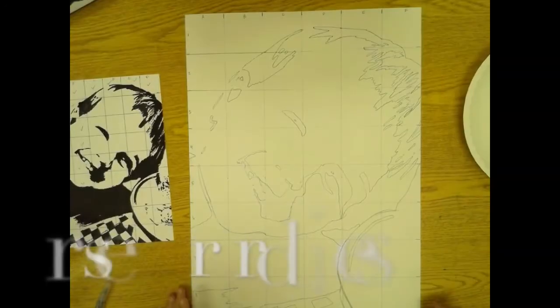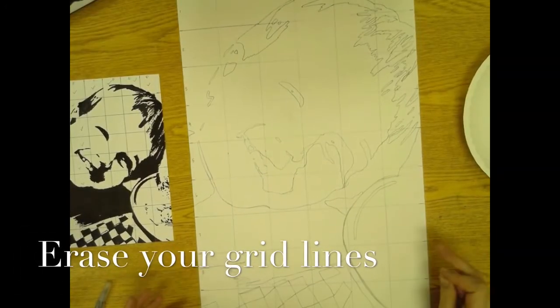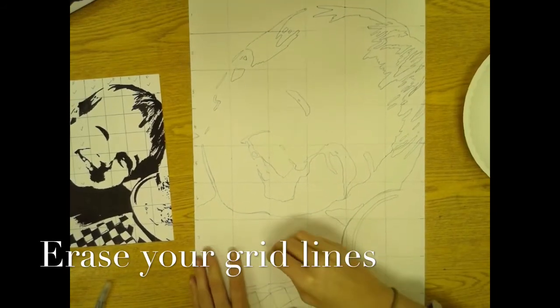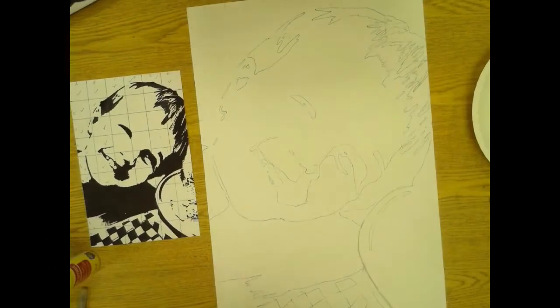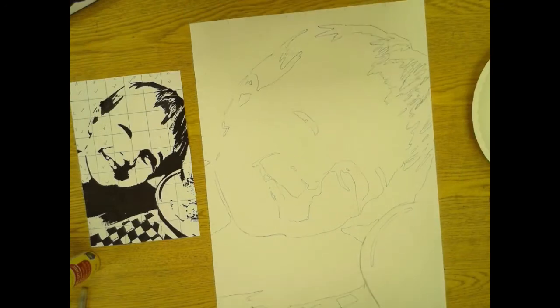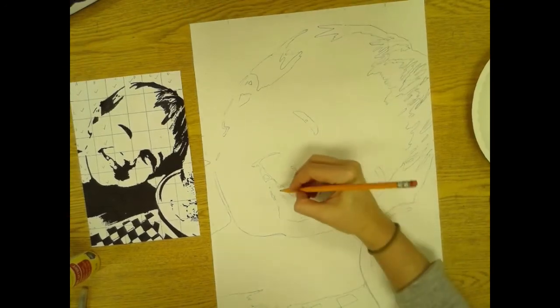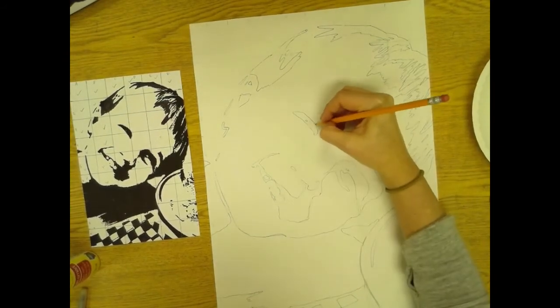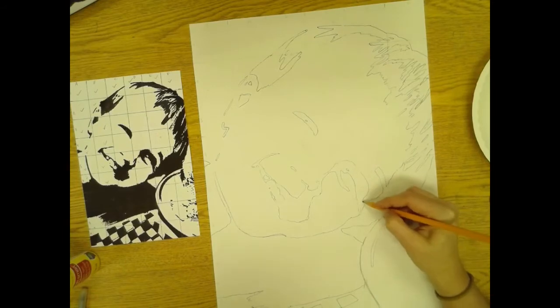Once I have everything drawn, I can go ahead and erase all of the grid lines. Then I'm done erasing, I'll make sure that I haven't erased any important parts of my drawing when I was erasing my grid, and then you are going to start painting.